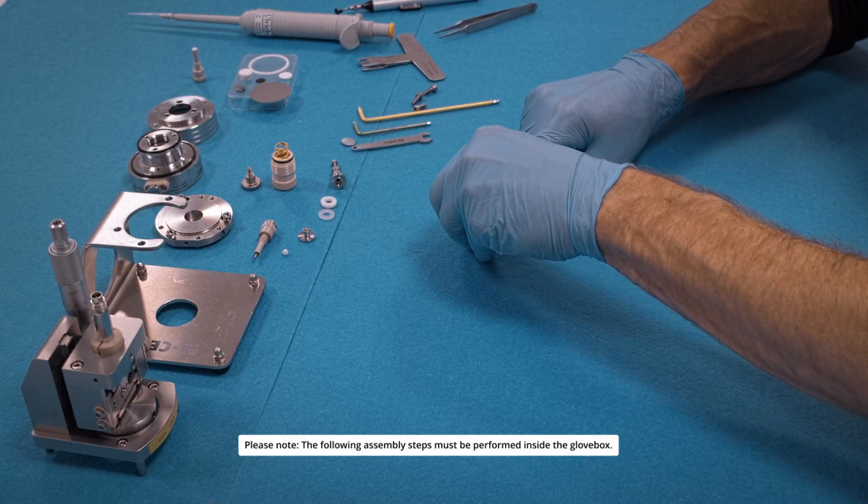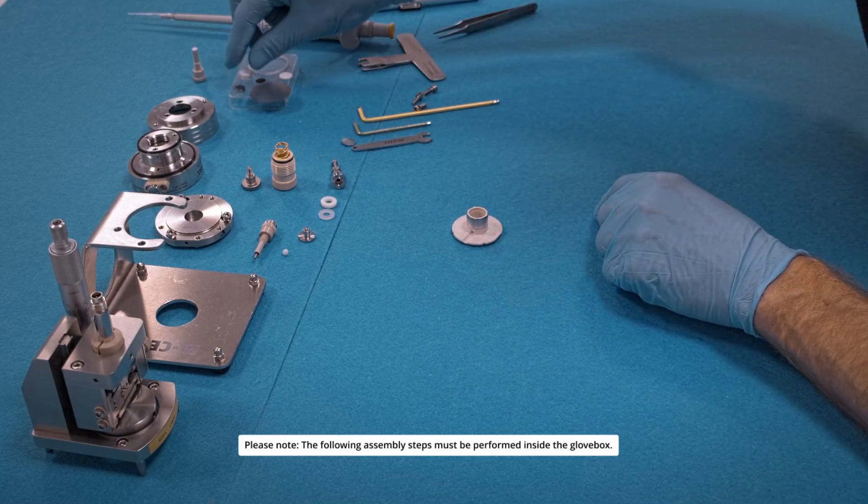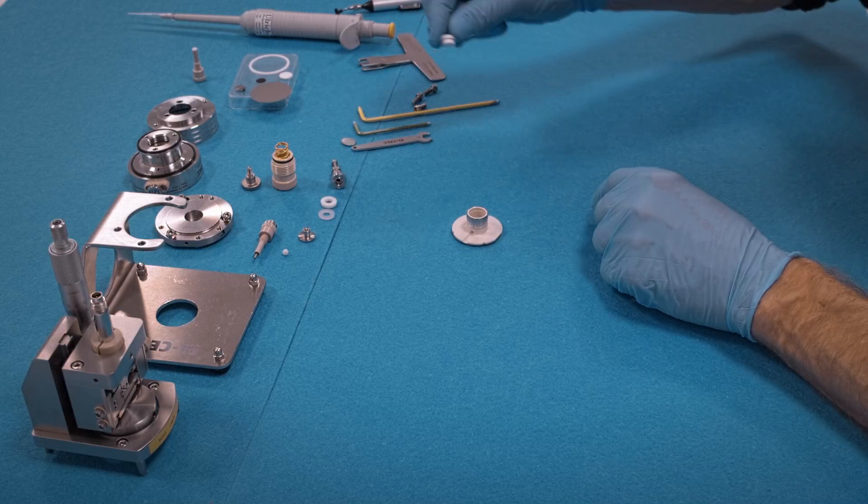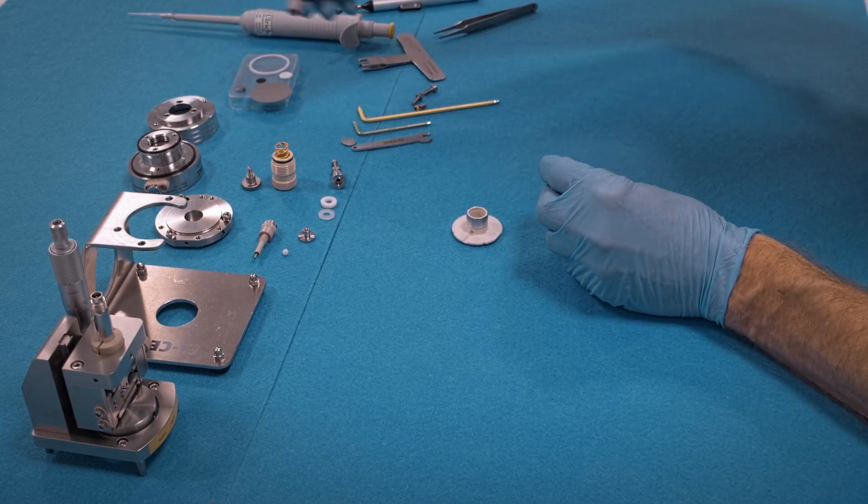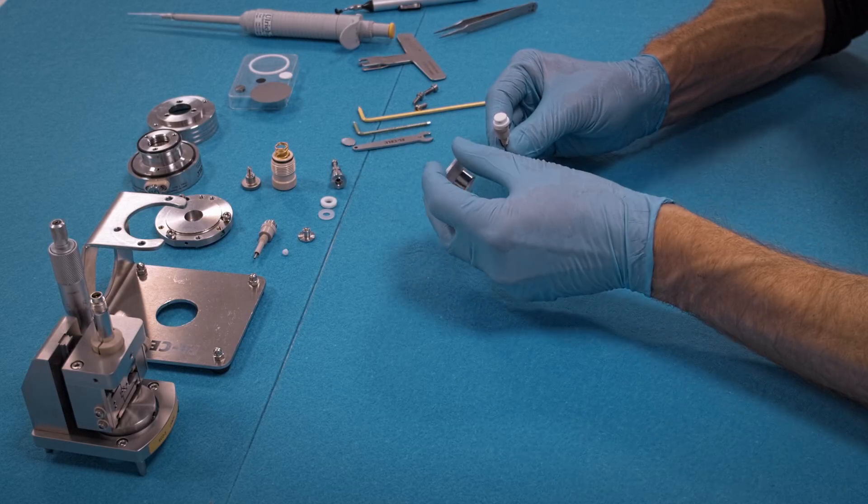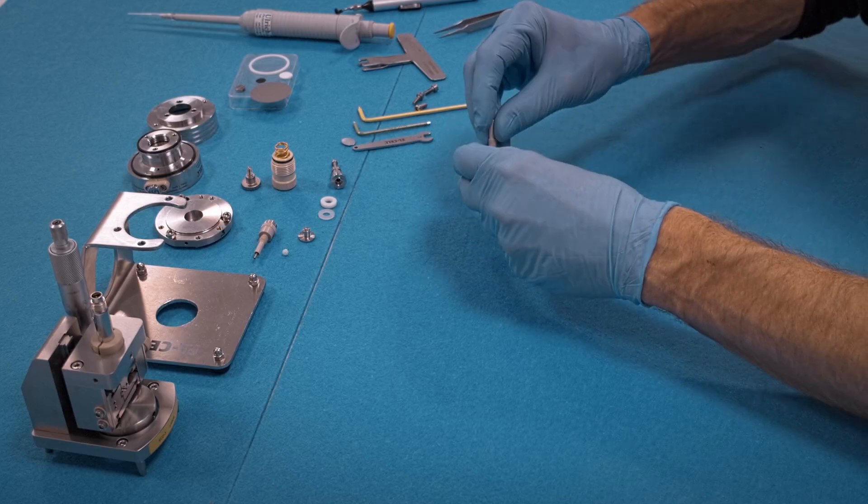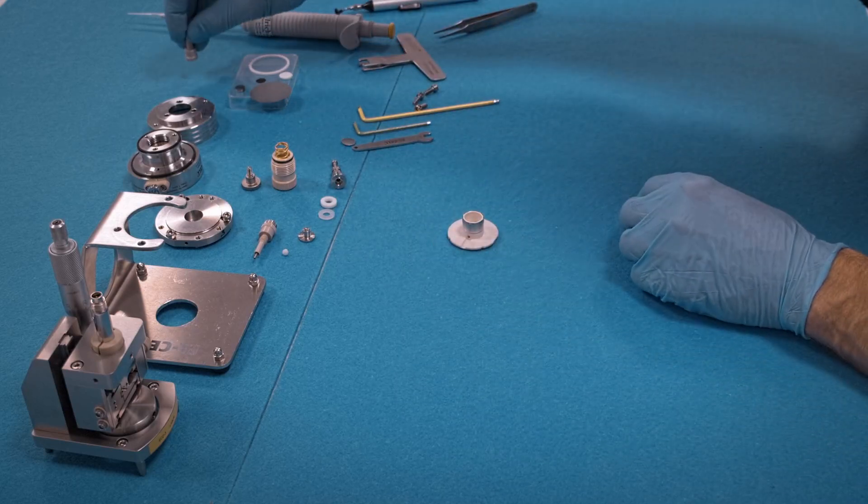We push the support ring onto the flange, then insert the glass frit. Put the glass frit on this little helper here, push the flange over the frit, and turn the assembly around.